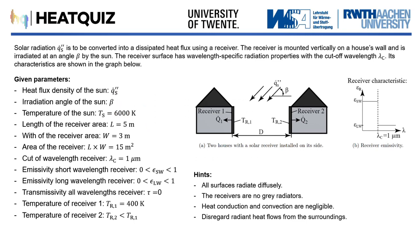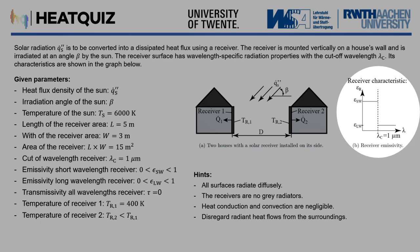In this demonstration we will focus on two houses having both mounted a solar receiver on their side. Solar irradiation is converted into a dissipated flux using these receivers. Both receivers have wavelength-specific properties, with the cutoff wavelength being lambda c. Its characteristics are shown in this graph, where it becomes apparent that the emissivity of the receiver is higher before the cutoff wavelength.